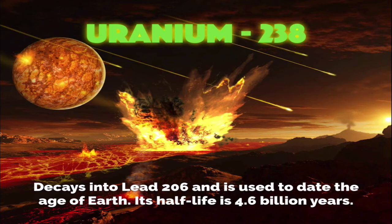Uranium-238 decays into lead-206 and we use it to date the age of the earth. That's because the half-life is equivalent to 4.6 billion years.